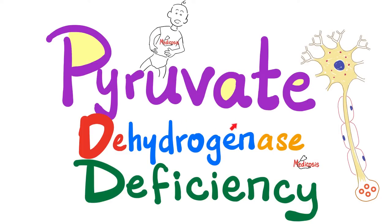In previous videos, we talked about insulinoma, glucagonoma, somatostatinoma, gastrinoma, and vipoma. We talked about glycogen storage diseases, lactose intolerance, galactosemia, and pyruvate kinase deficiency. But today it's time to talk about pyruvate dehydrogenase complex deficiency, which can lead to lactic acidosis, which causes high anion gap metabolic acidosis, as well as several neurological symptoms.